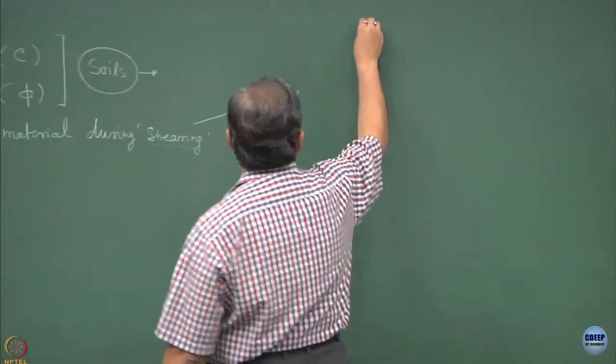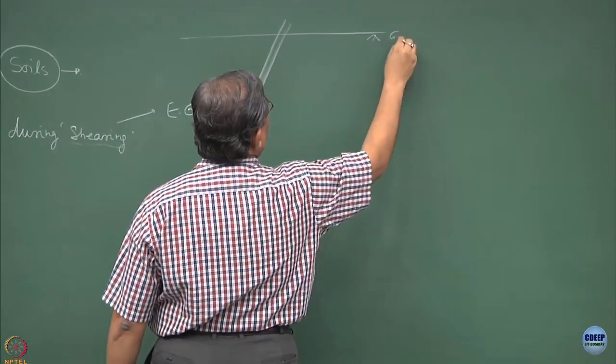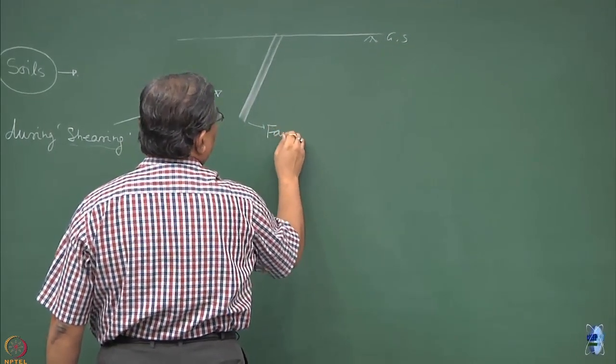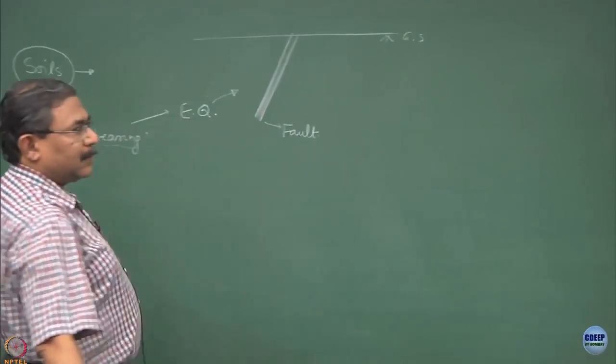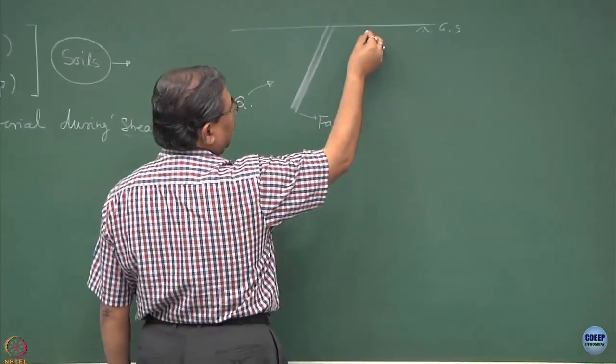So there could be a situation where if you have a fault inside the ground, this happens to be the ground surface, and this is the fault. In geology you must have studied this, the possibility is that this portion slips down.